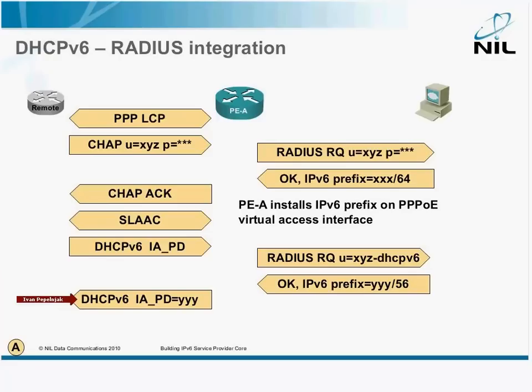So in this case, the PE router is really a DHCP server — not a DHCP relay, but a server — and it gets the bindings from the RADIUS server.